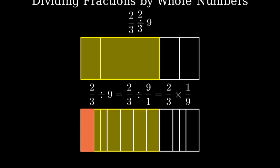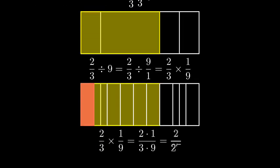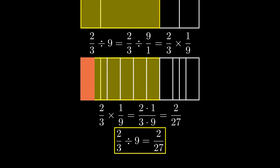Now, let's solve this algebraically. When we multiply two-thirds by one-ninth, we multiply the numerators together and denominators together. Two times one is two, and three times nine is twenty-seven. So, our final answer is two-twenty-sevenths.